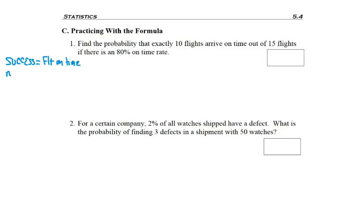I always want to define success, which in this case is a flight on time. How many flights am I looking at? There were 15 flights. How many did I want to be successful? 10. What's the probability that any given flight was successful? 80%, but remember we had talked about writing it as a decimal because I'm going to be using it in the formula. So the probability of failure was the complement, the other 20% or 0.2.